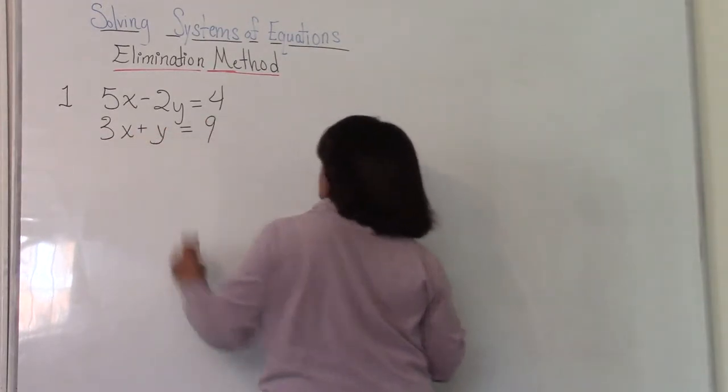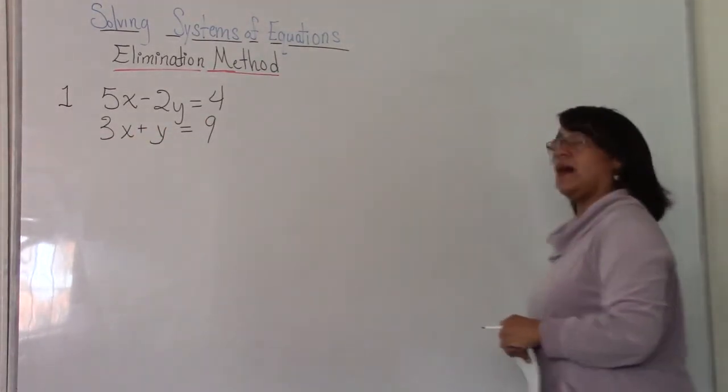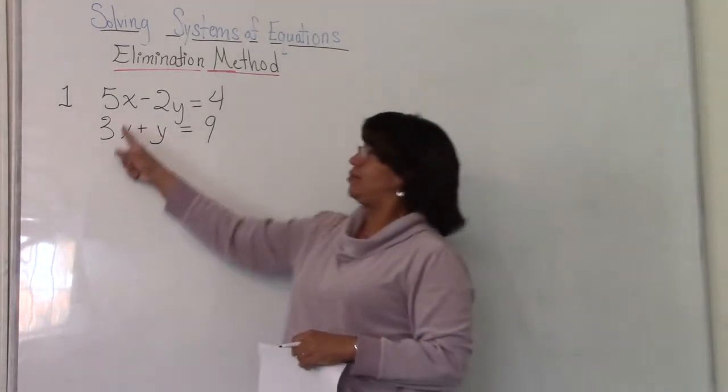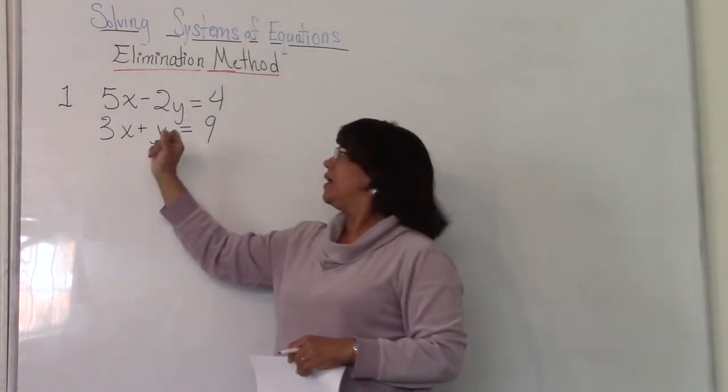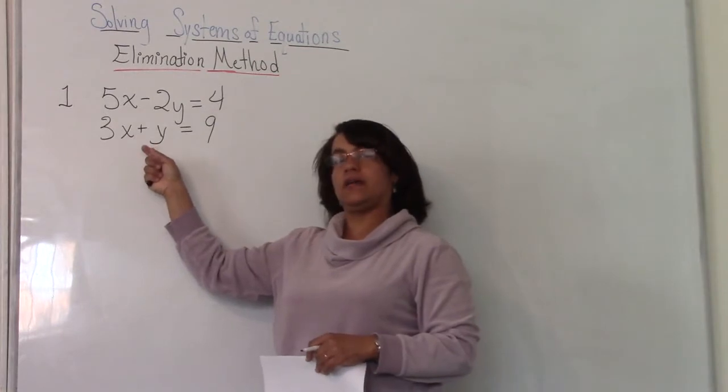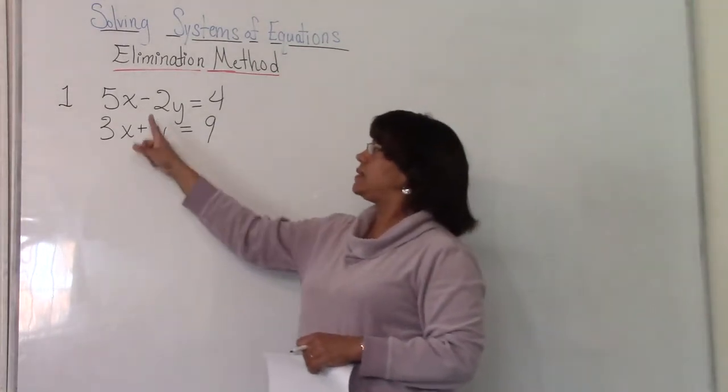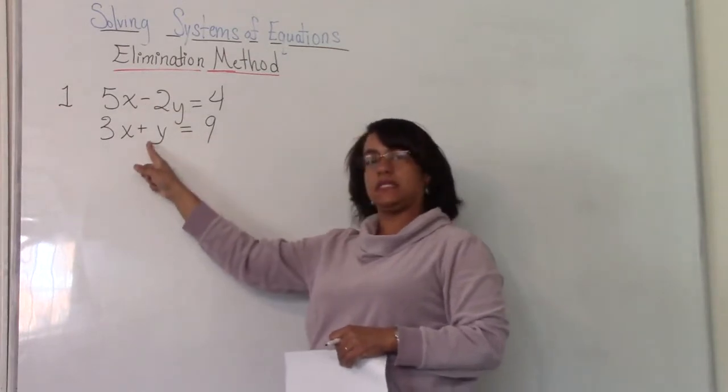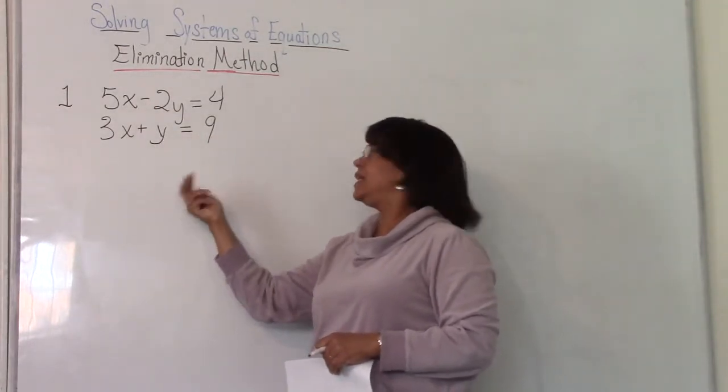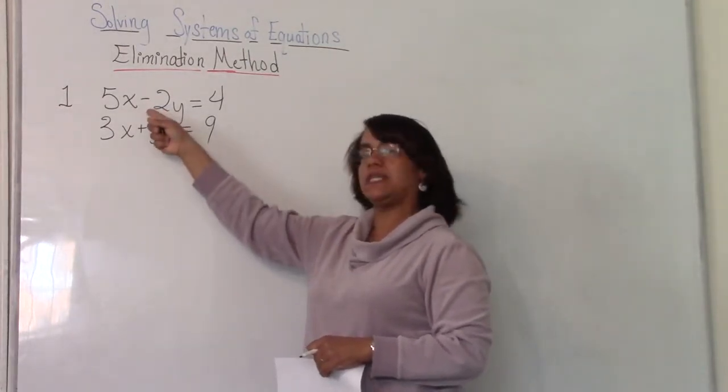If we look at this system, we see that we don't have any opposites because 5x and 3x are definitely not inverses and negative 2y and y are not inverses. But what we do see is that we do have at least an opposite sign here, a negative and a positive. So what would we need in this equation to make it the opposite of negative 2?